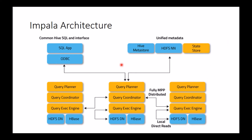When a query comes in, it's received by one of the query planner components of Impala, sitting on a single data node. That same node translates it into the query coordinator. The query coordinator, alongside HDFS, the data node, and the execution engine, determines which actual data node will execute which parts of the query.